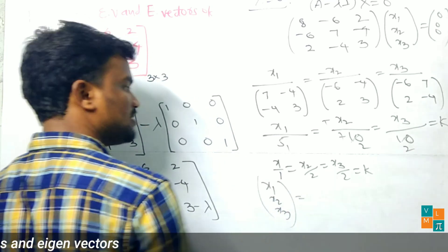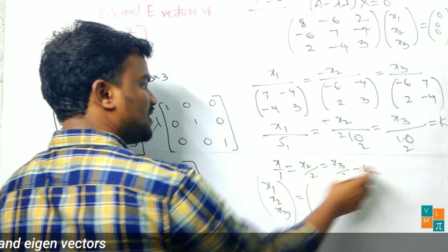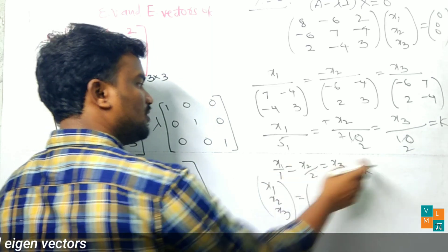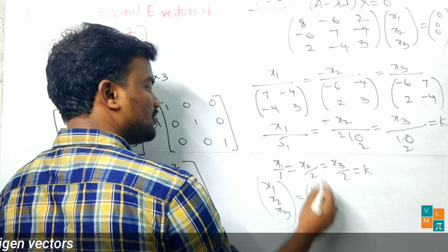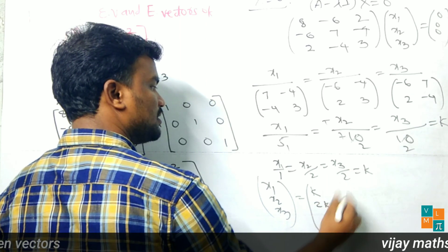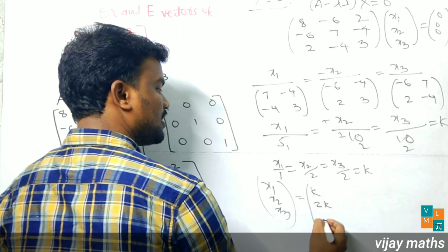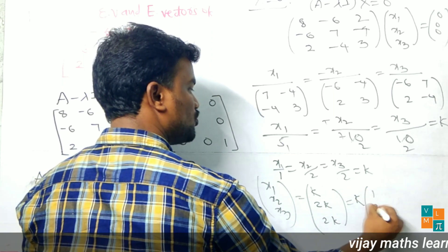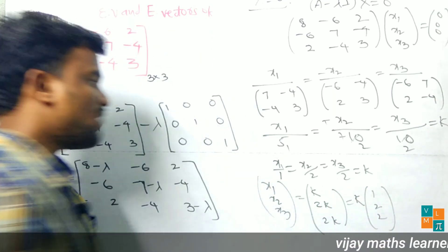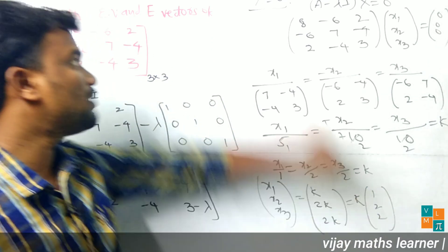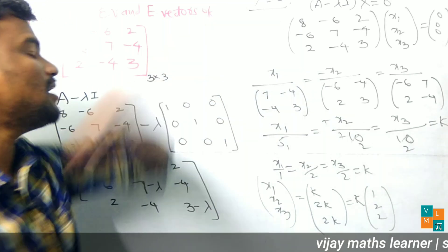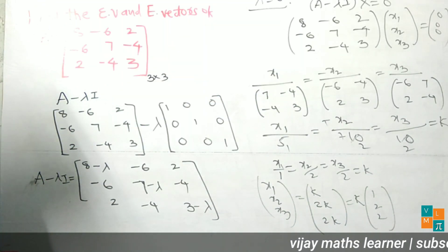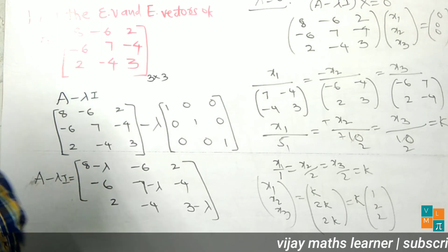Simplifying the ratios by dividing by 5: x1 by 1, x2 by 2, x3 by 2, all equal to constant k. Therefore x1 equals k, x2 equals 2k, x3 equals 2k. Taking k common, the eigenvector is [1, 2, 2]. This is the eigenvector corresponding to the eigenvalue lambda equals 0.